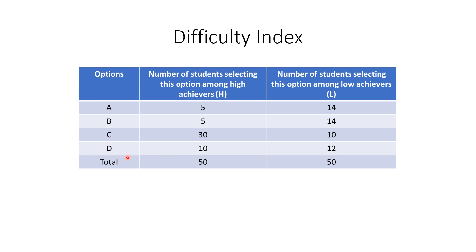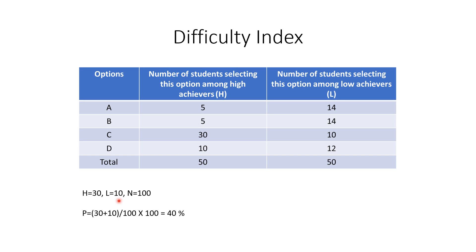Going back to the example table: the correct answer is C. So H is 30 (30 high achievers selected C) and L is 10 (10 low achievers selected C), with N = 100. Putting this into the formula: P = (30 + 10) / 100 × 100 = 40%. So the difficulty index of this item is 40%.